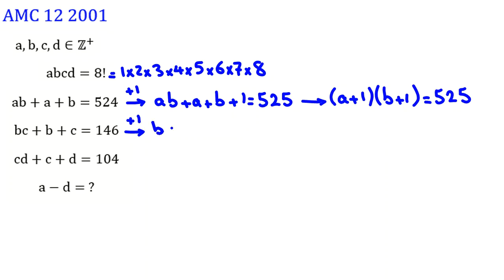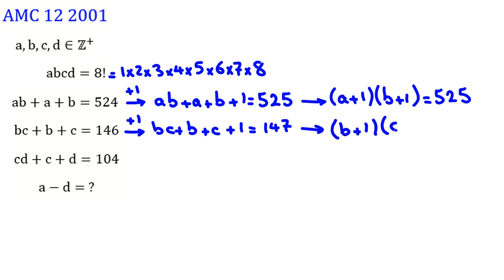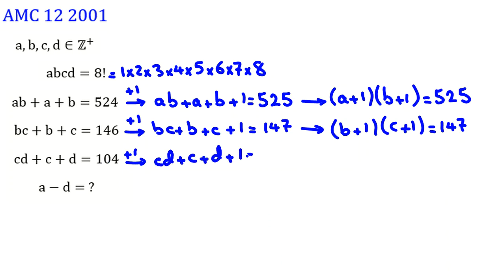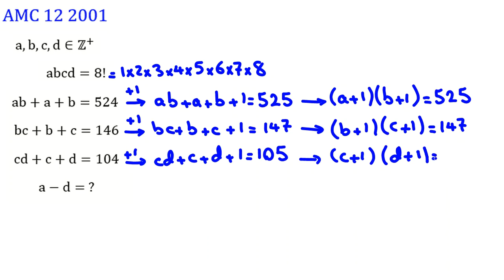Applying the same technique: BC plus B plus C plus 1 equals 146 plus 1, which is 147. So (B plus 1) times (C plus 1) equals 147. Doing the same for the third equation: CD plus C plus D plus 1 equals 104 plus 1, which is 105. So (C plus 1) times (D plus 1) equals 105.